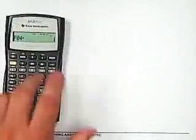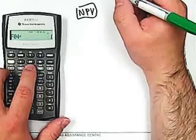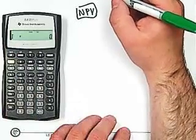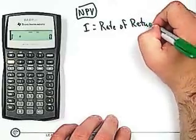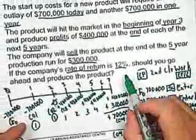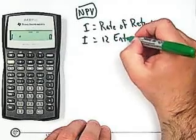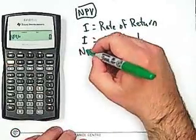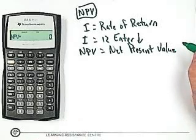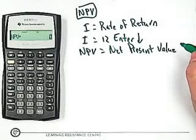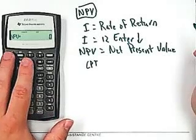Once we're done, hit the NPV button — it's right next to the CF button, not a second function, just hit NPV. What comes up is I, which is our rate of return. The rate of return was 12%, so for I we type in 12, enter, then the down arrow. This brings us to NPV, which stands for Net Present Value. Hit compute and the calculator will take all the information in the cash flow function and convert it to a present value amount.